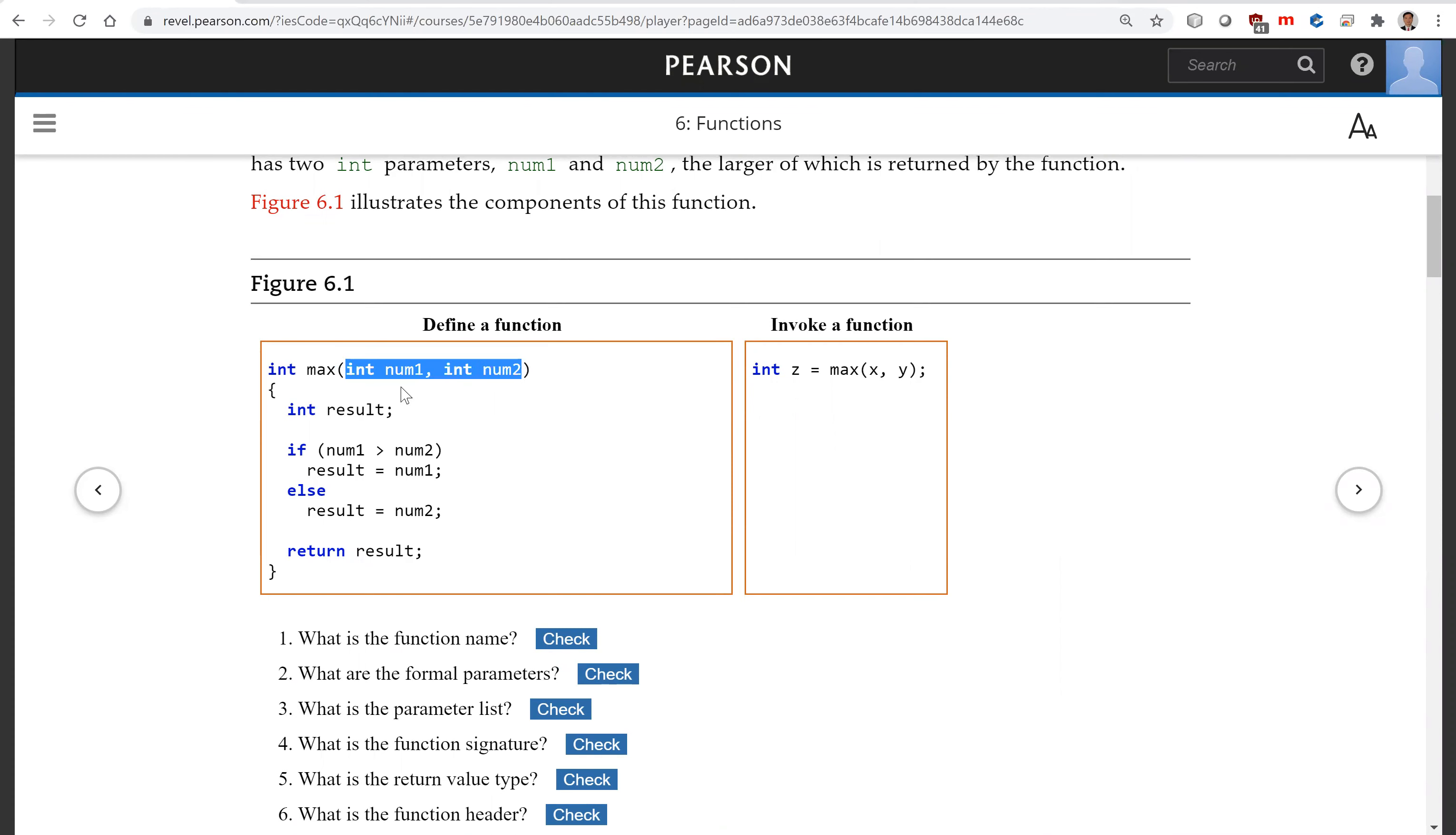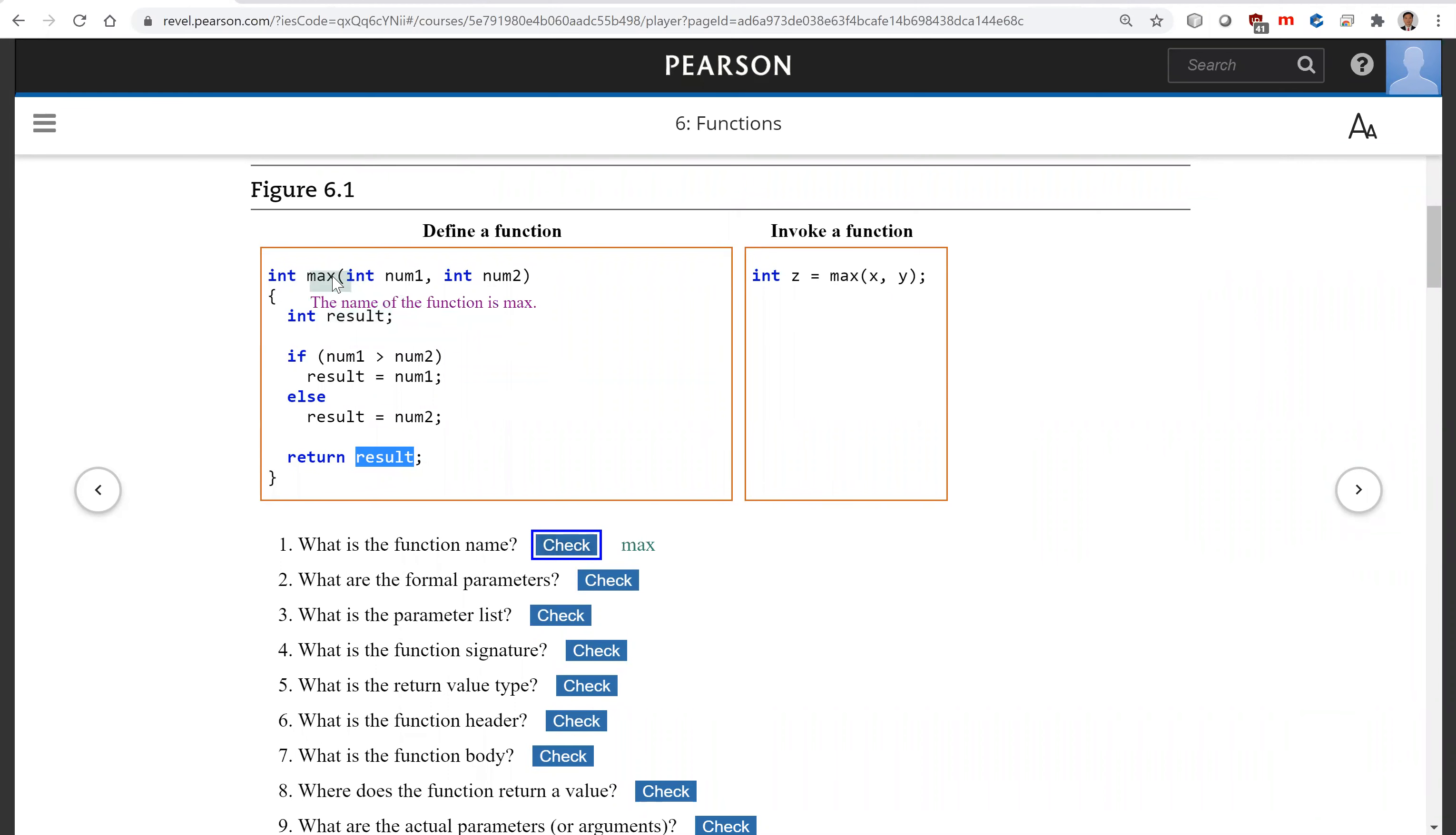To define a function you will give the function name and a list of parameters. Each parameter has a name and type. They are separated by commas. The function may have a return value. The return value type is specified here and this is the body of the function. The function has a return value. It has to be returned using the keyword return with the value. So this is the definition of a function.